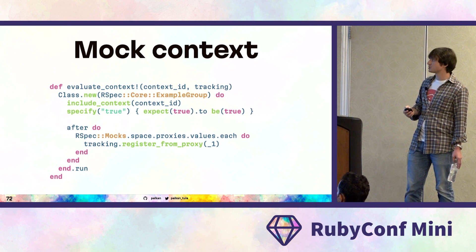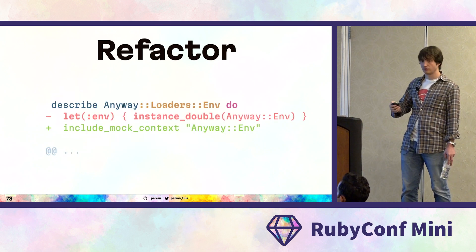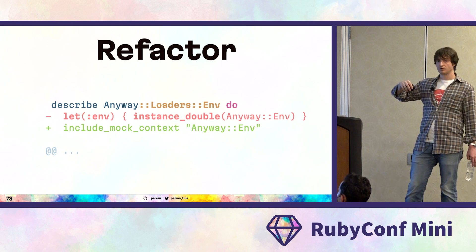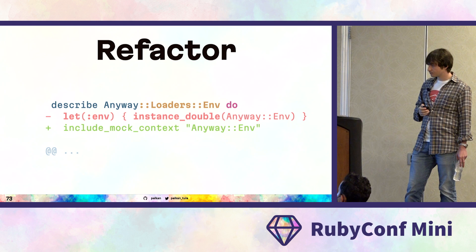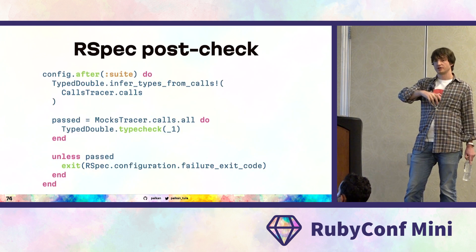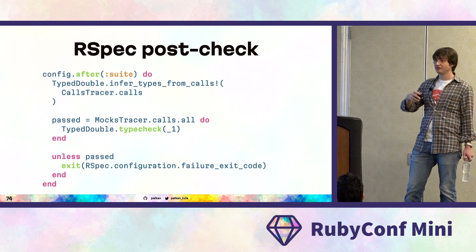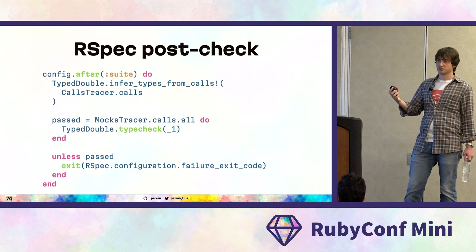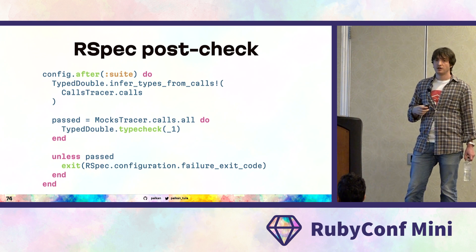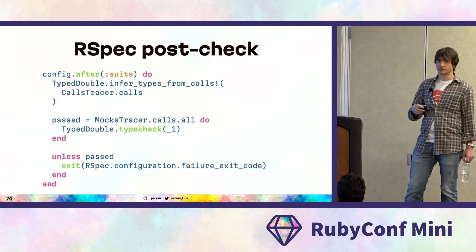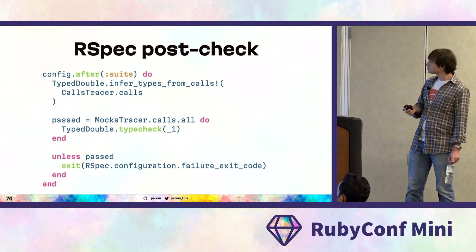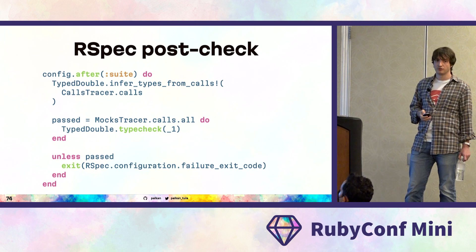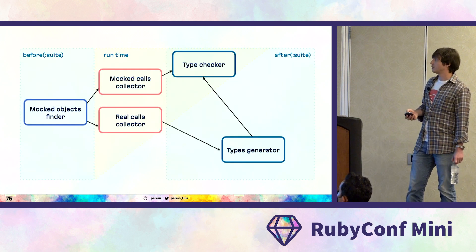That helps us evaluate the mock against its types. The only change needed in our tests is to move from inlining stubs and mocks to using context for that. Since we collect call traces and mocked calls concurrently, we cannot verify a mock right at the time it was called — we might have no call traces yet for the corresponding real object. That's why we moved the verification to the post-run phase: after the suite, we infer types, do type checks, and fail if any type checks didn't pass.